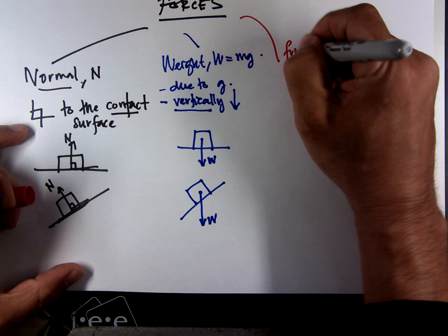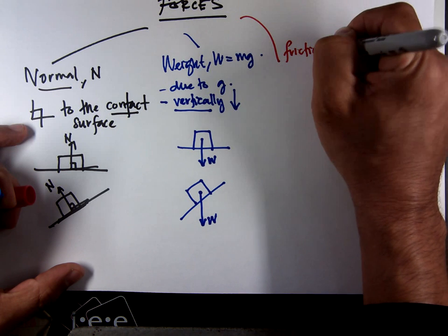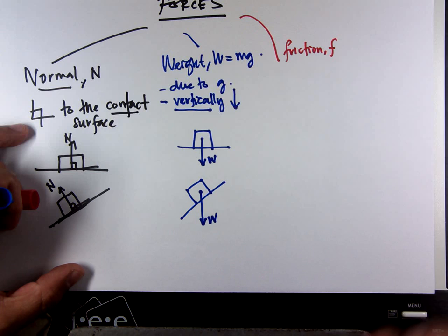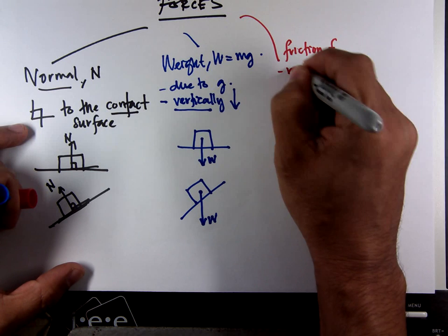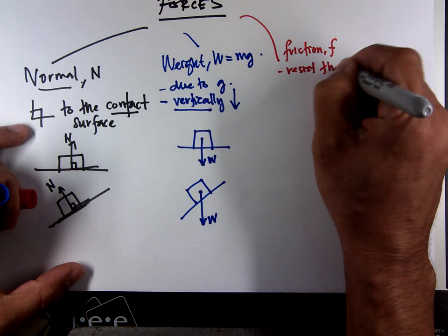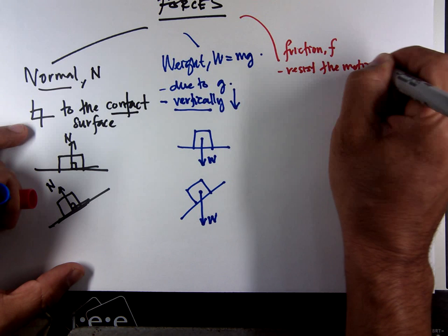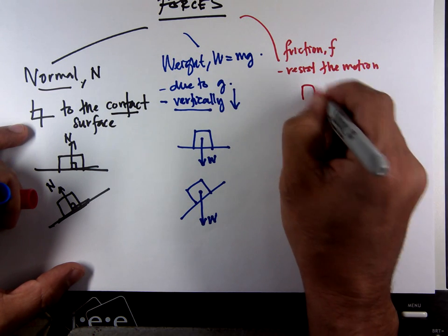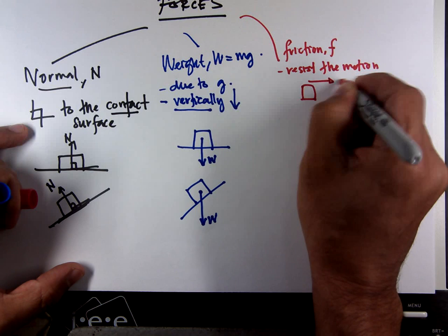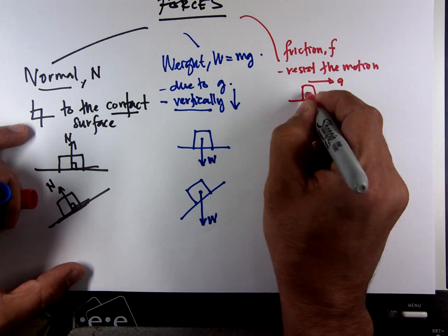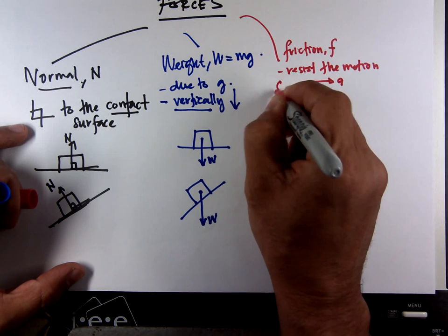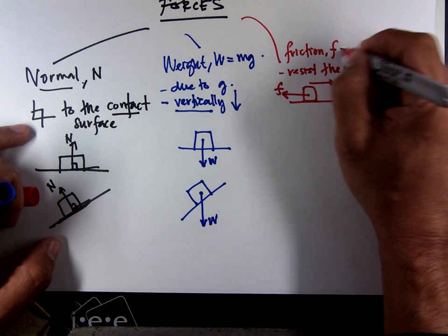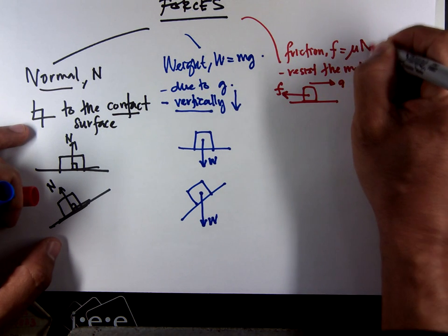Friction, little f. What is friction? Friction is force that resists the motion of an object. If the object is moving to the right, friction is to the left, opposite. We have f equals mu N.